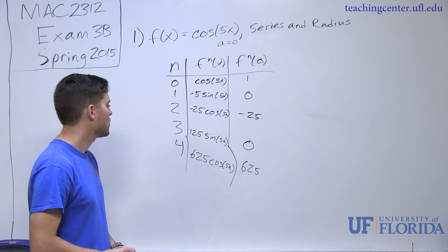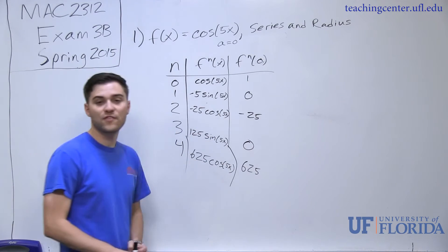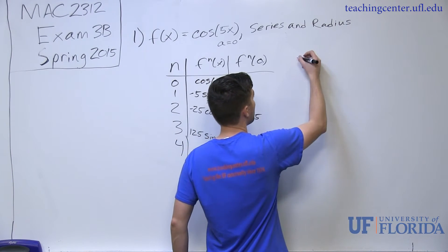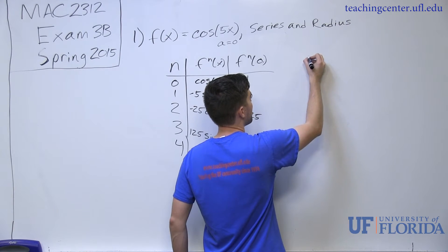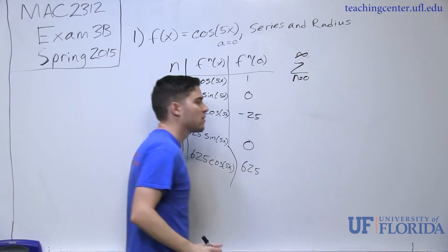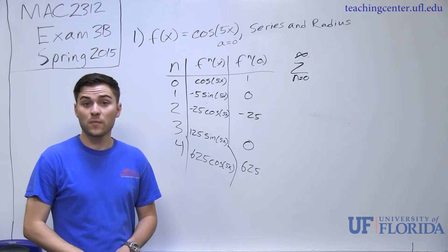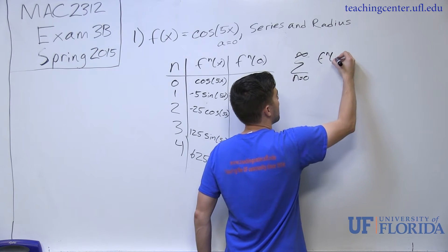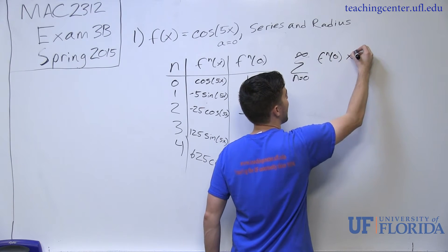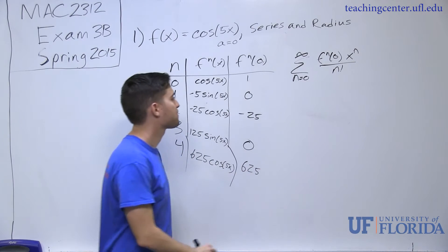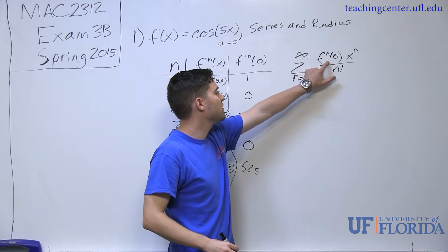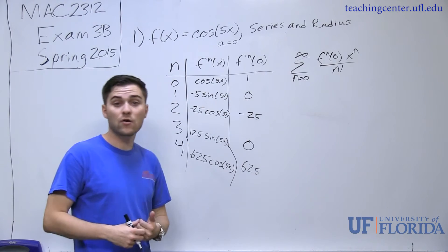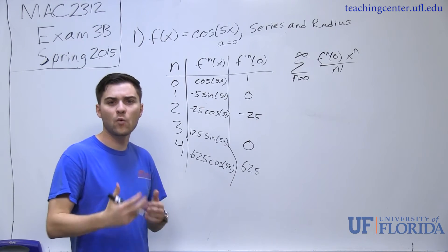Now we have our Taylor coefficients. We can go ahead and plug into our Maclaurin series formula. The formula for a Maclaurin series is n equals zero to infinity, f^n of zero, x to the n, divided by n factorial. Now I have all these coefficients, and I can figure these out by plugging in my values. Let's write out our series terms and see if we can figure out what the pattern is.